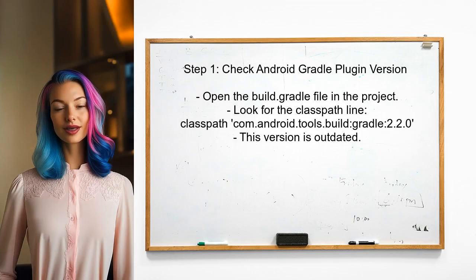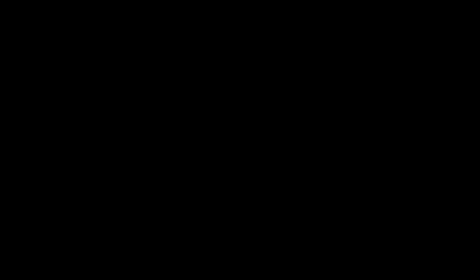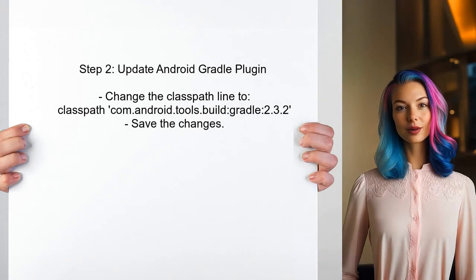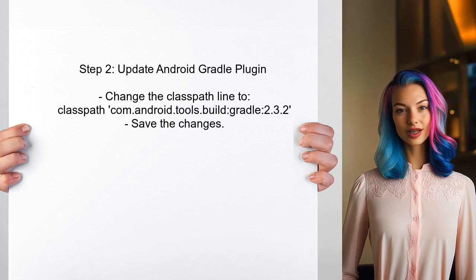To resolve the error regarding the test compile method, first check the version of the Android Gradle plugin being used. The error suggests that the current version may not support this method. Next, update the Android Gradle plugin to a more recent version — a recommended version is 2.3.2 or higher. This can be done by modifying the class path in the build.gradle file.